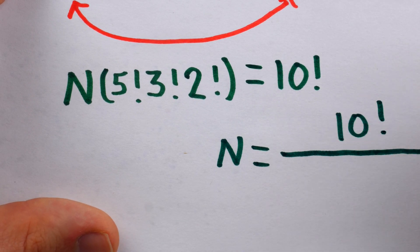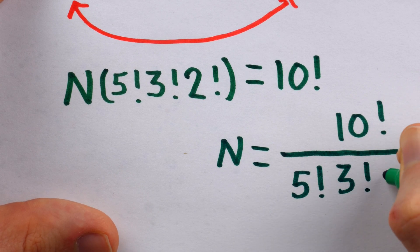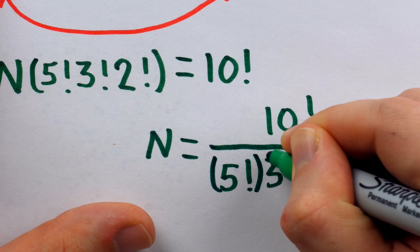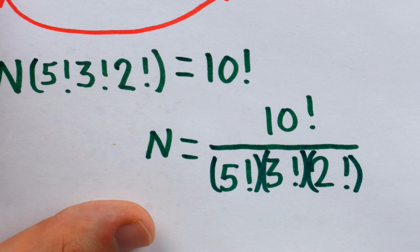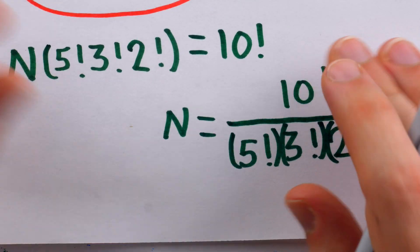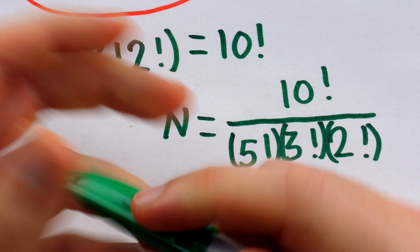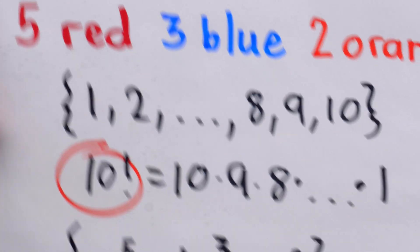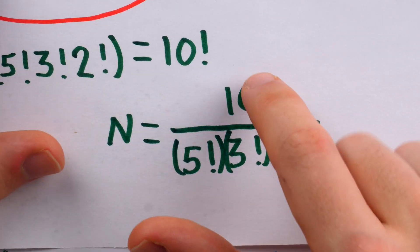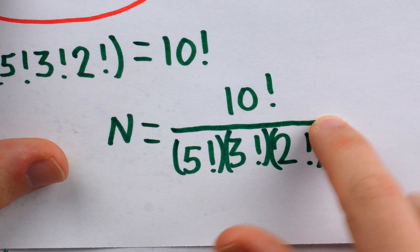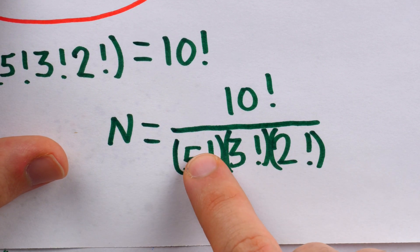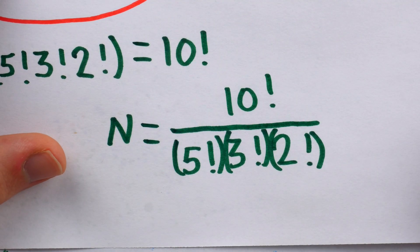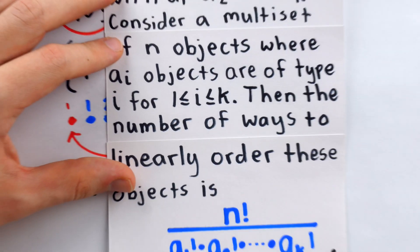n is equal to 10 factorial divided by 5 factorial times 3 factorial times 2 factorial. If you've watched my video on sub-factorials, you might find this a little ambiguous and insist that we get some parentheses in there so it's clear that the factorials are on the right sides of the numbers. This computation is actually pretty easy to generalize to count the number of linear orderings of multi-sets in general. If our multi-set has n objects, then to count the number of linear orderings we just do n factorial and divide by the product of the factorials of the numbers of duplicates of each object type.